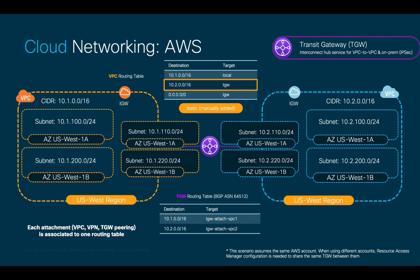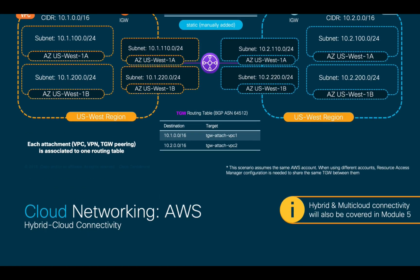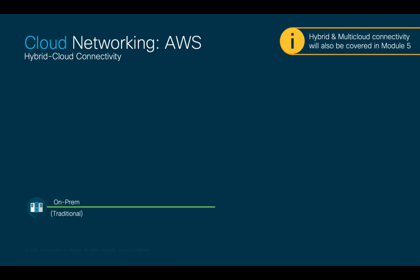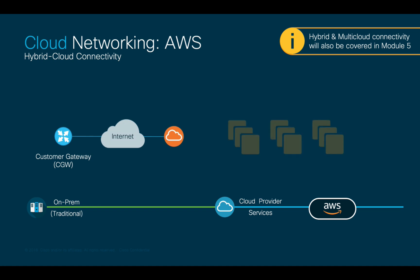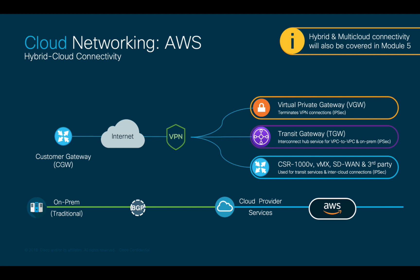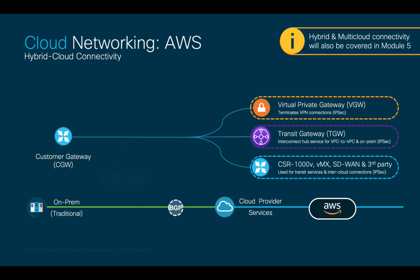In this case, the orange VPC would have a route to the blue VPC CIDR pointing out to the TGW as next hop, and the same thing would happen in the other direction. In AWS, when connecting on-prem environments to your instances on the cloud, you may simply use the internet and connect through your VPC IGW, you may also run site-to-site IPsec VPNs over the internet, which can be terminated using any of the options mentioned before, or you can also use a high-bandwidth private physical connection from the cloud provider, which in the case of AWS is called Direct Connect.